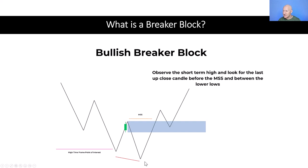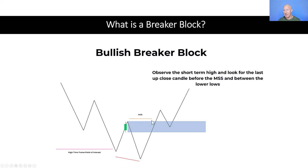So this low is now lower than the previous one — we have lower lows. The market then retraces back and trades higher than the short term high, giving us our bullish market structure shift, and we trade back into this zone before trading higher. In this example, our bullish breaker block is the last up close candle in this short term high, which is between the two lower lows and prior to our market structure shift.